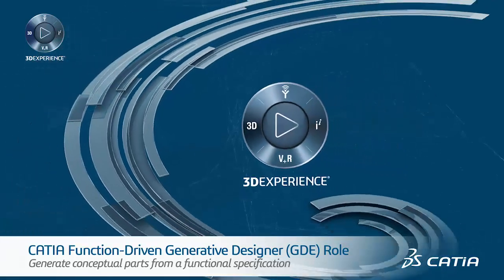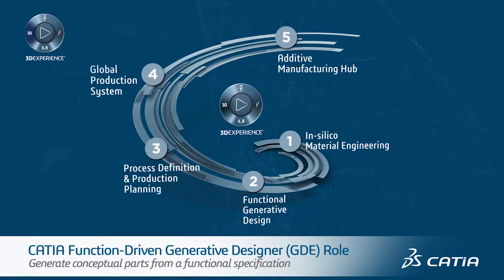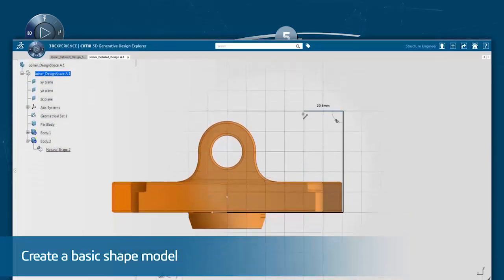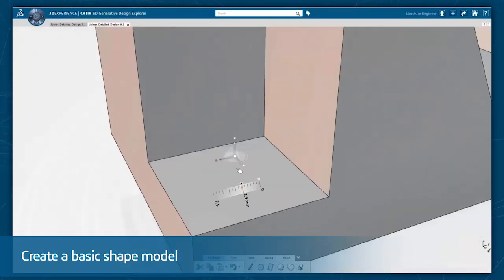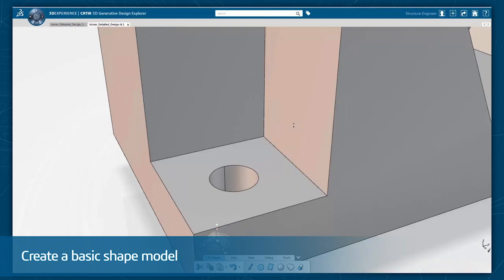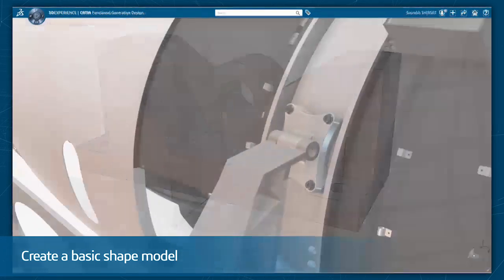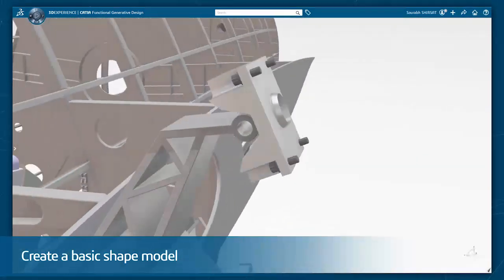The CATIA Function-Driven Generative Designer role answers these challenges with a new intuitive workflow which allows non-specialist designers to automatically generate conceptual parts from a functional specification. You can start by using CATIA's built-in direct modeling to create a basic shape model or a de-featured dumb model imported from other systems. A quick in-context check allows you to evaluate the functionality of the primitive shape.